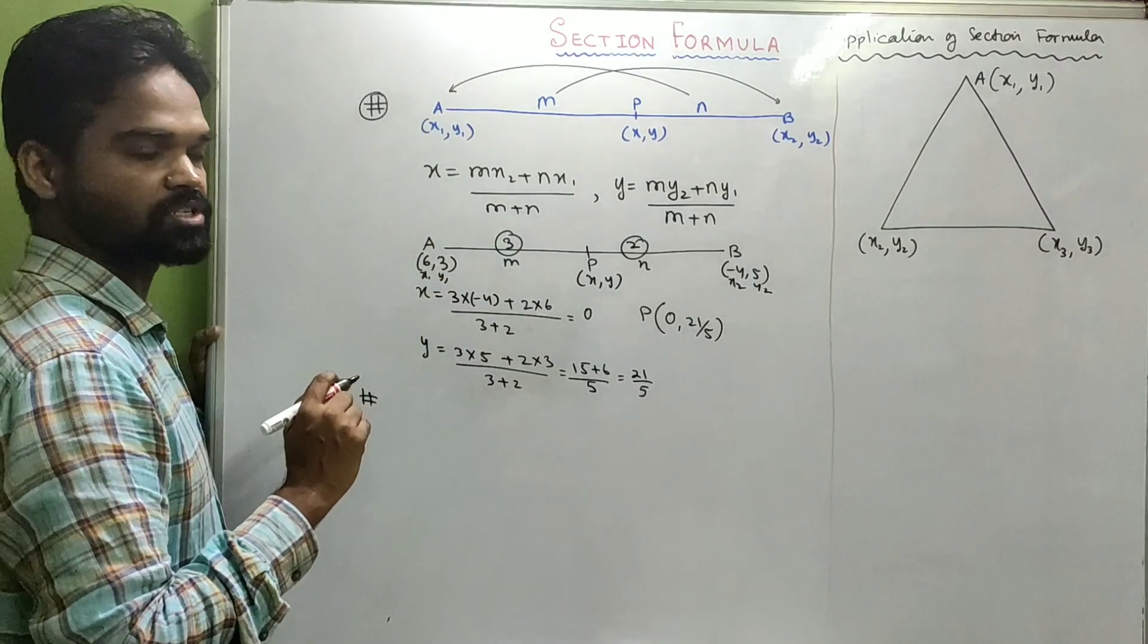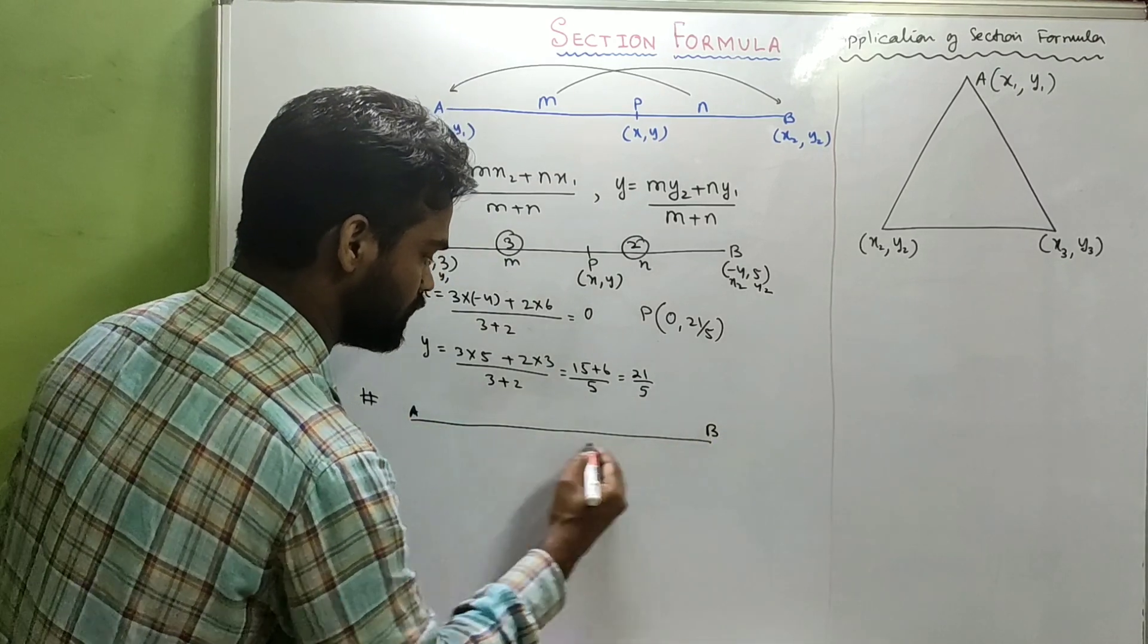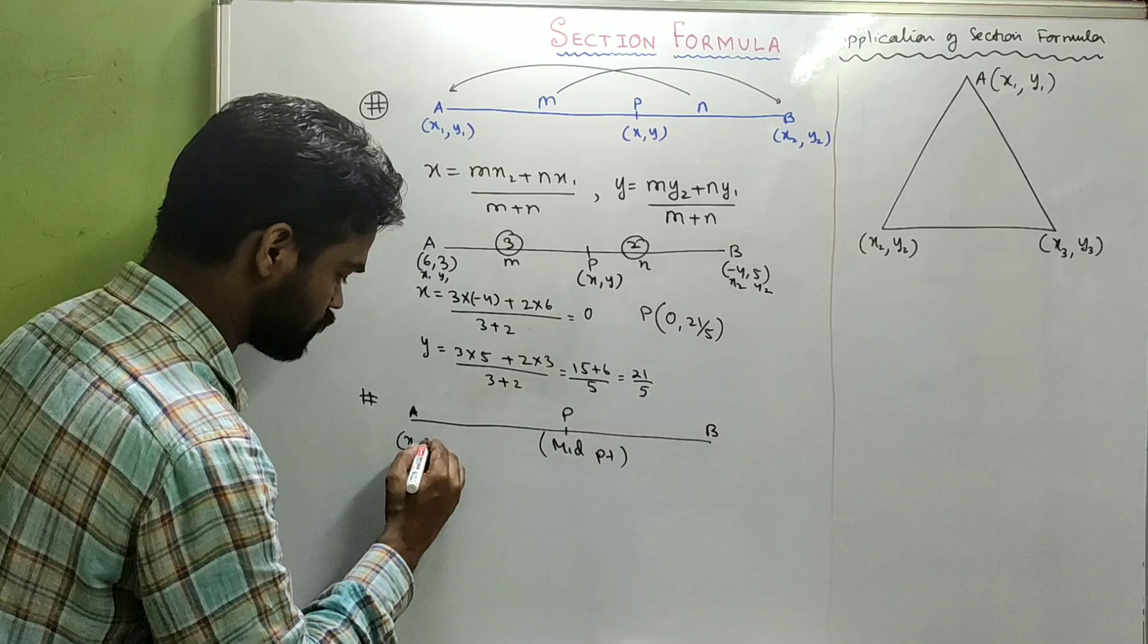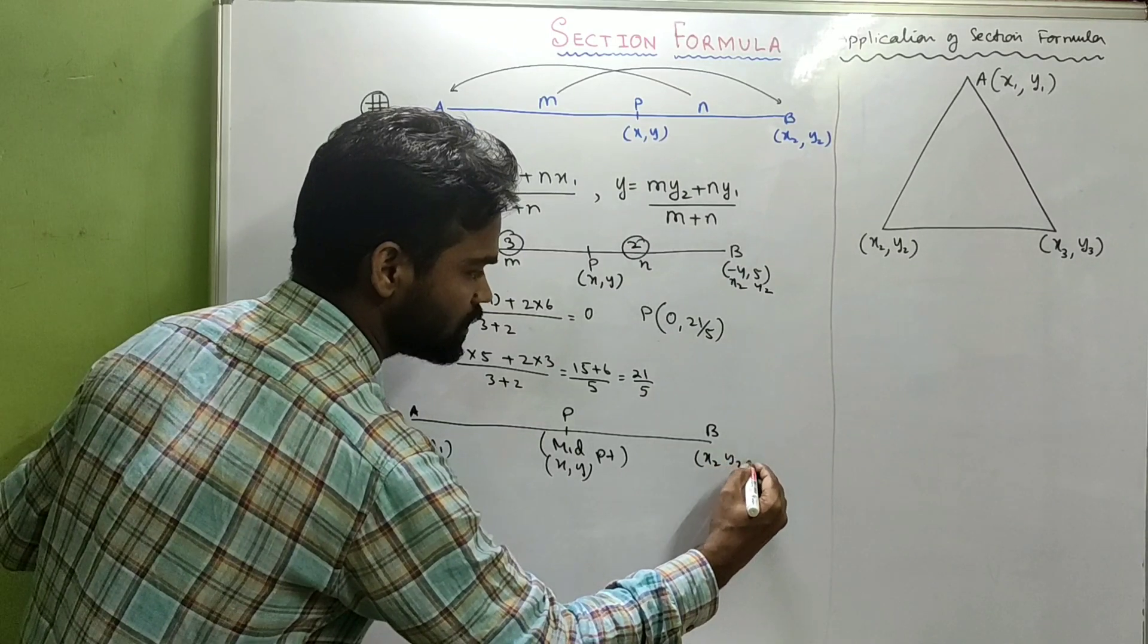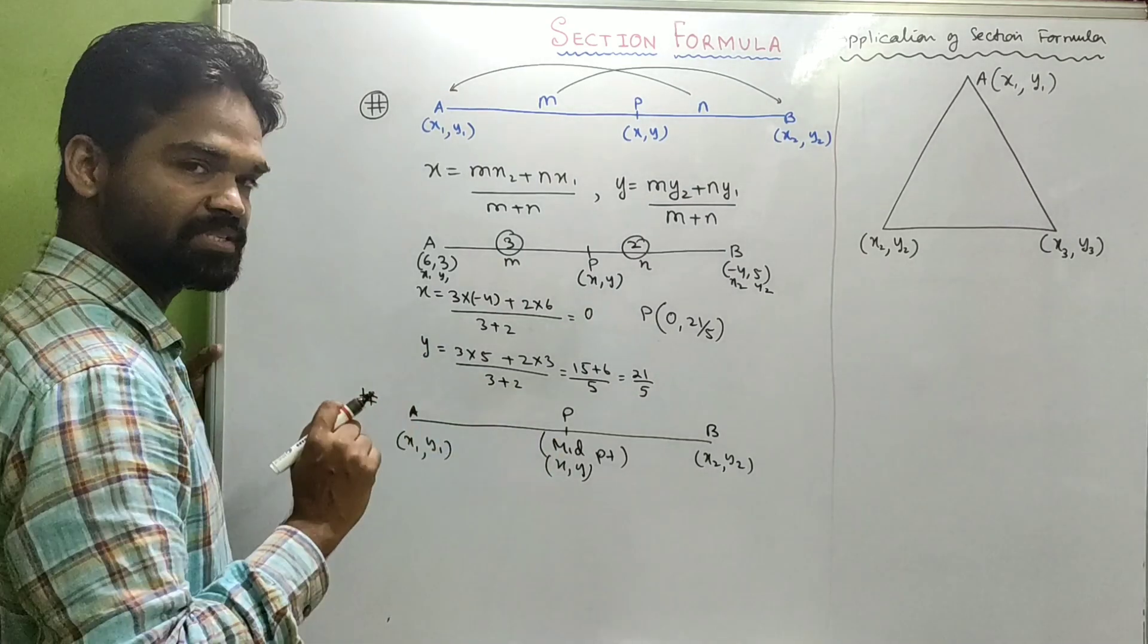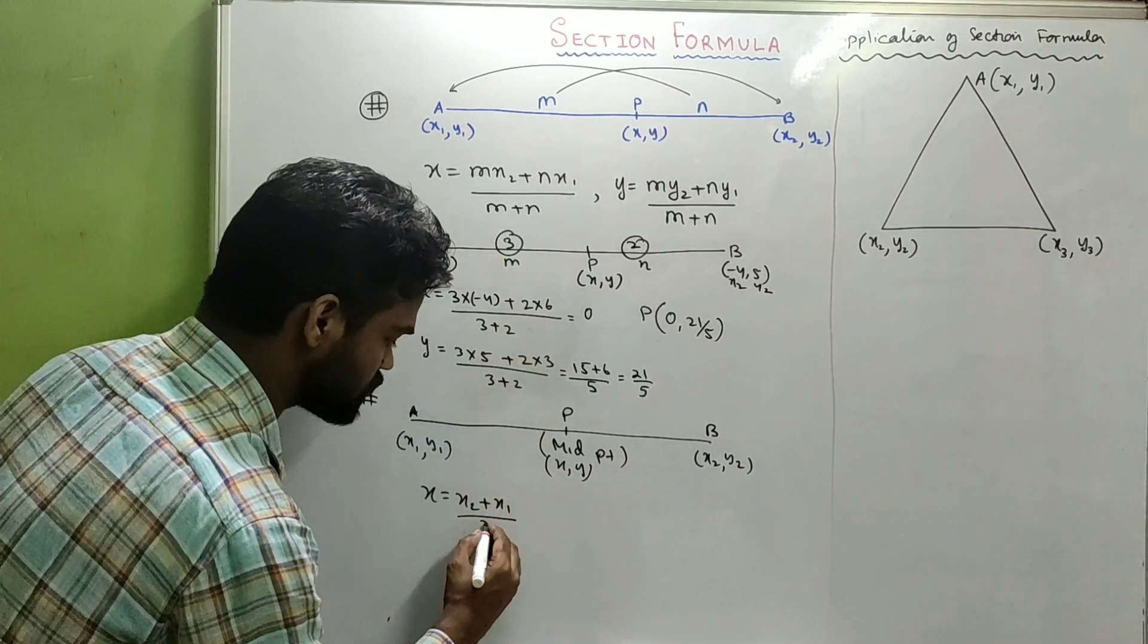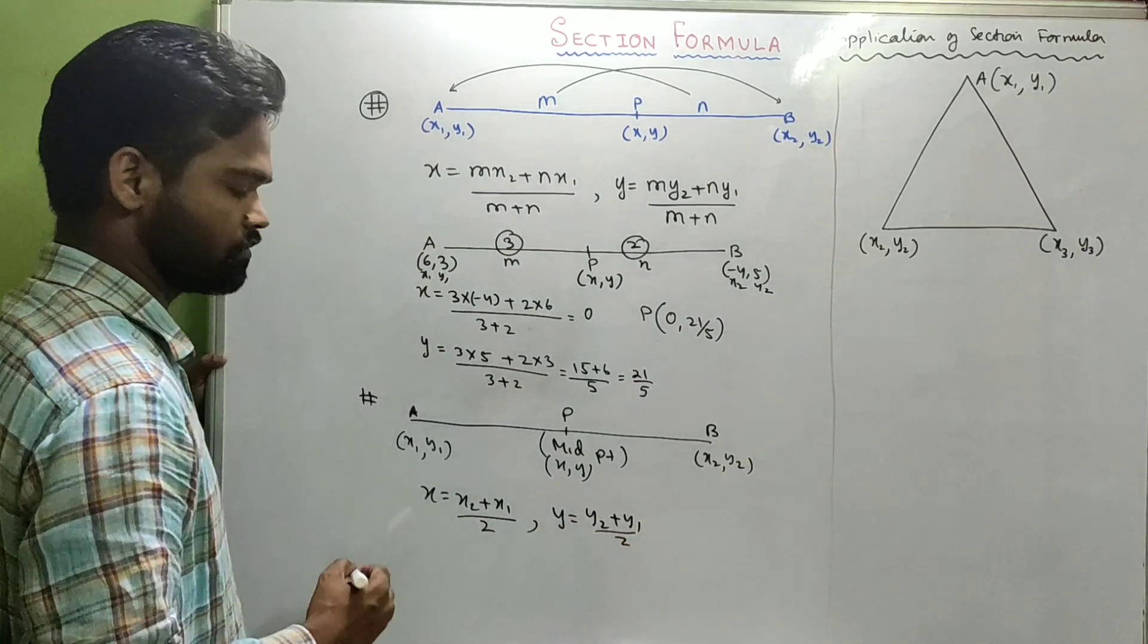Now, let us see two applications of section formula. Suppose I take line segment AB and P is midpoint. P is the midpoint, which means the ratio is 1 is to 1. So instead of M and N, I'll put 1, because P is the midpoint. So what will be X? 1 into X2 plus 1 into X1 by 1 plus 1, that's 2. Similarly, Y will be Y2 plus Y1 by 2.